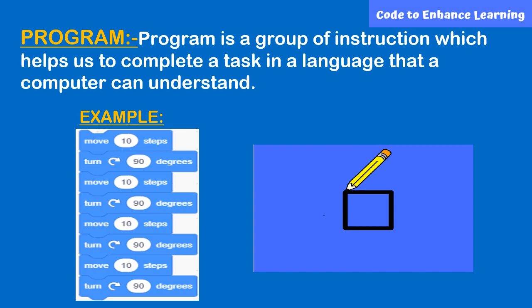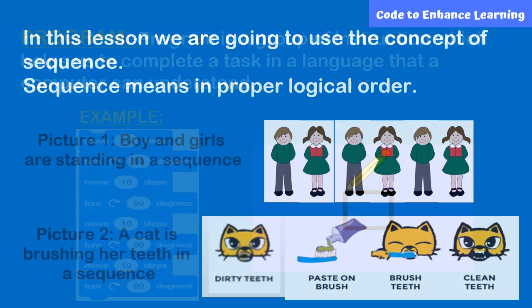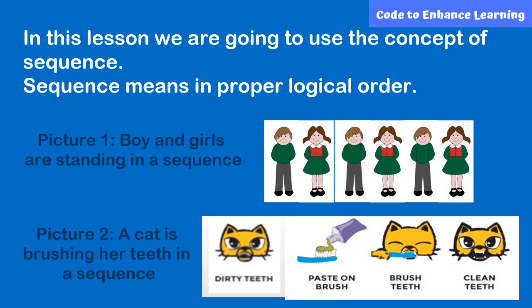The process of writing a program or code is called programming or coding. In today's lesson, we are going to learn a new concept: sequence. Sequence means things in a logical order. You can see tiles on a floor are in logical order. The first picture shows girls and boys standing in a logical order, and the second picture shows how you brush your teeth, which also follows a logical sequence.